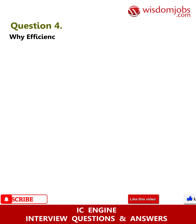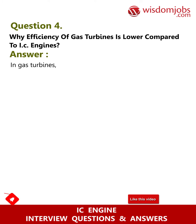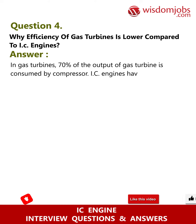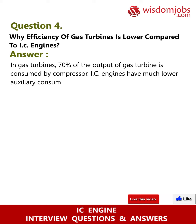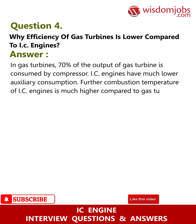Question 4: Why is the efficiency of gas turbines lower compared to IC engines? In gas turbines, 70% of the output of the gas turbine is consumed by the compressor, whereas IC engines have much lower auxiliary consumption. Further, the combustion temperature of IC engines is much higher compared to gas turbines.